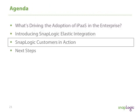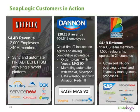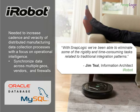Looking at a few of our customers — companies like Netflix, Dannon, and Bloomin' Brands, parent company of Outback Steakhouse — it's fairly common where we get into an organization and help you solve for a specific set of use cases. It might be HR onboarding where you're moving to Workday and need to connect to Active Directory with real-time synchronization, or digital marketing with Tableau and Redshift, or general cloudification. That's really been the case at iRobot, where they needed to increase the cadence and veracity of their distributed manufacturing data collection process, with a strong focus on operational intelligence.